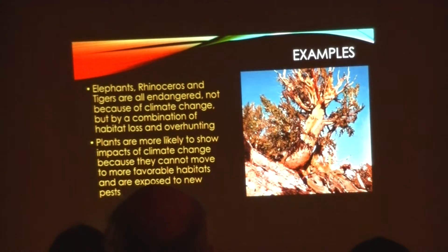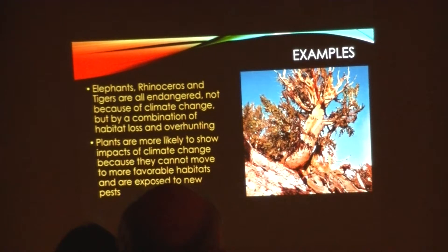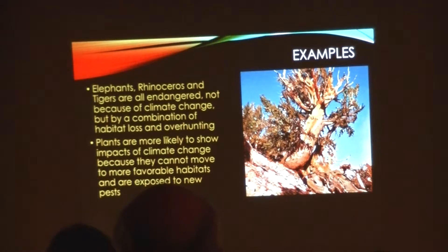Elephants, rhinoceros, and tigers are all endangered, but not because of climate change — because of a combination of habitat loss and over-hunting, especially for their horns with rhinoceroses and their tusks for elephants. The irony is that some Indian and Asiatic elephants have basically given up on having tusks now. There's been such strong selection against elephants with big tusks that a lot of elephants born nowadays never develop tusks. So they figured us out — it's kind of a harsh way of doing it, but it's become a big issue.